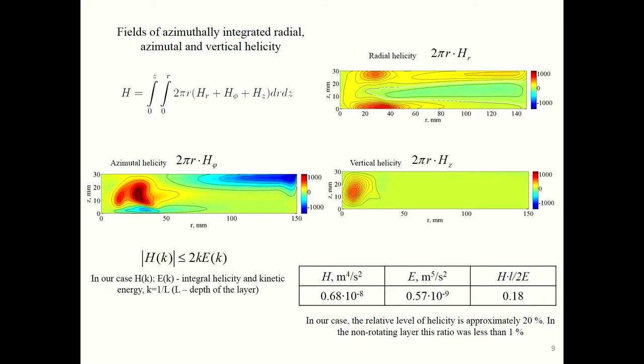There are fields of azimuthally integrated radial, azimuthal, and vertical helicity. Radial helicity is smaller than azimuthal and vertical. Vertical helicity is concentrated, as we expected, in the area where we have strong correlation between upward motion and cyclone. Here the large negative value of azimuthal helicity is concentrated in the periphery where divergent flow is replaced by convergent, and there's a maximum in the area of secondary structures formation.